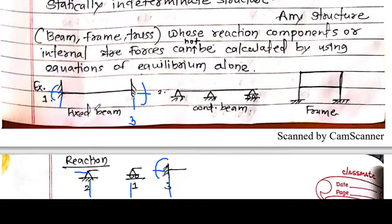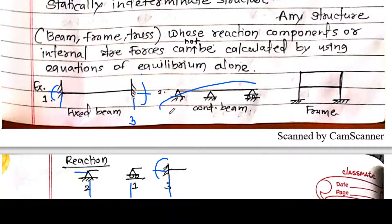Similarly, for this continuous beam — 2 reactions at first hinge support, 2 at second hinge support, 1 at roller support — total 5 reactions, and equations are 3. So 5 minus 3 = 2 extra equations are required to analyze this beam completely. That means 2 is the degree of static indeterminacy for this particular beam.